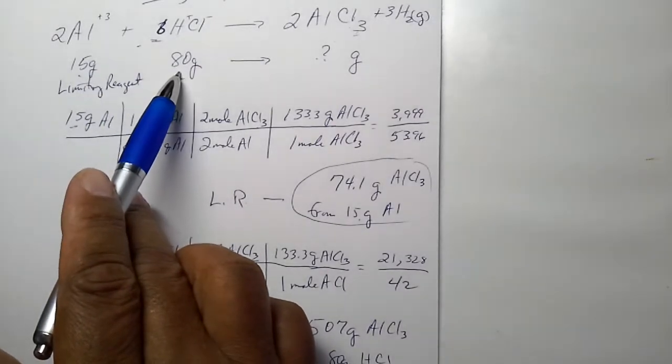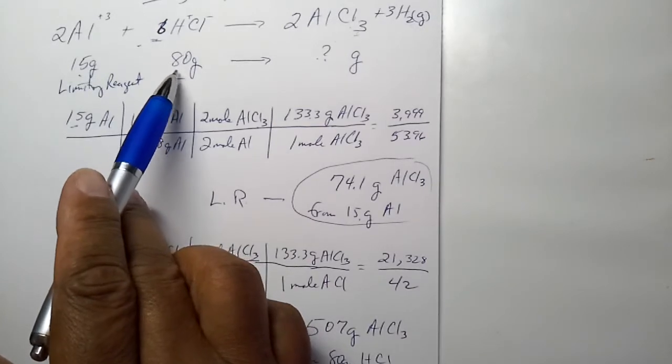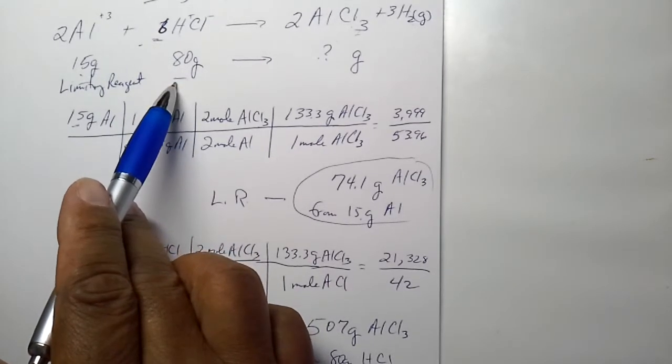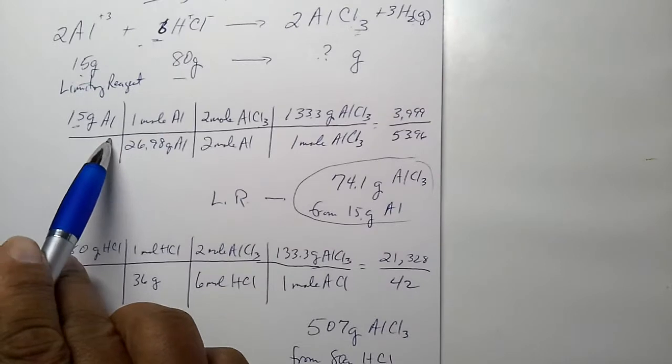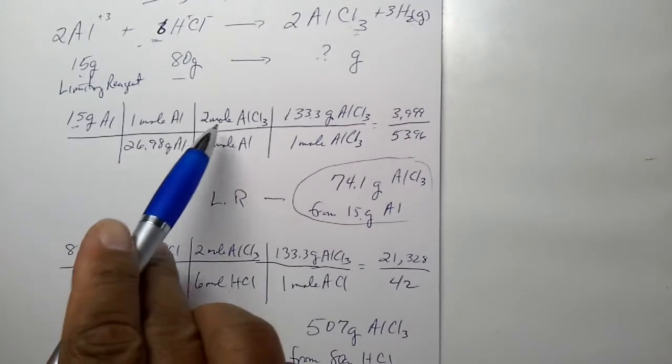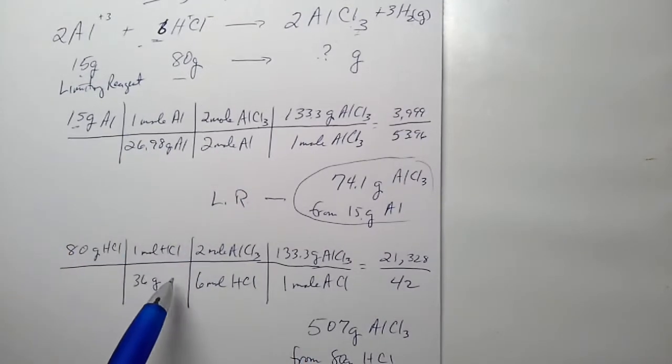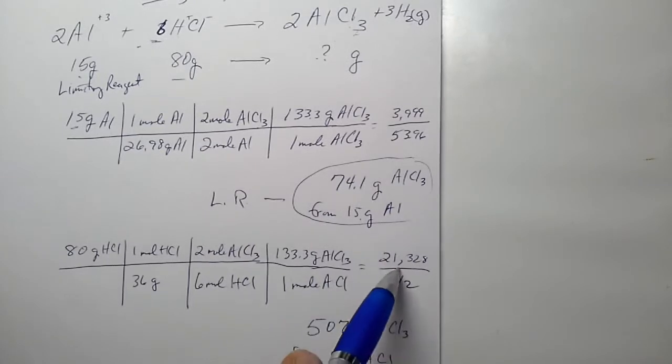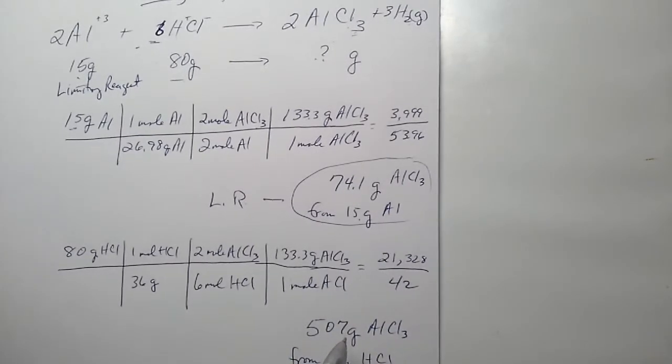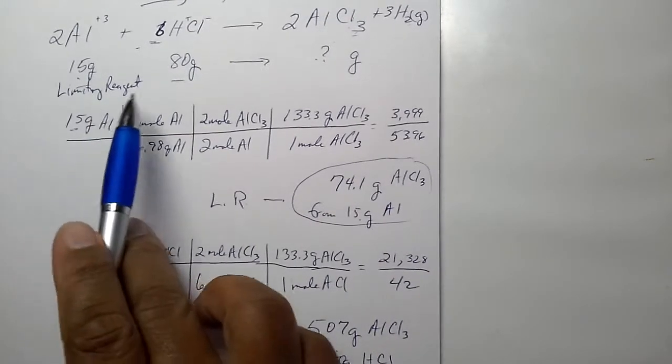Sometimes the higher amount of reactant is the limiting reagent. You won't know until you do a mole-mole ratio and calculate the total number of grams produced by each of the reactants.